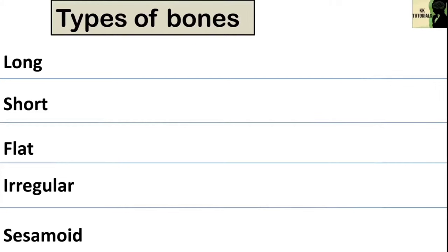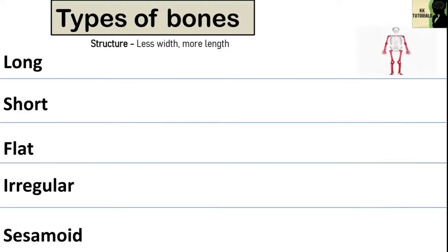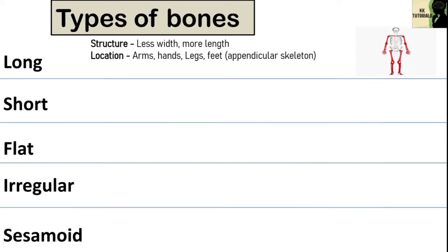Long bones are those that are longer than they are wide. They are mostly located in the appendicular skeleton and include bones in the upper limbs, that is bones of arms and hands, and lower limbs, that is bones of legs and feet. Since they are long, they give support to the body and also involve in production of blood cells as they contain bone marrow.